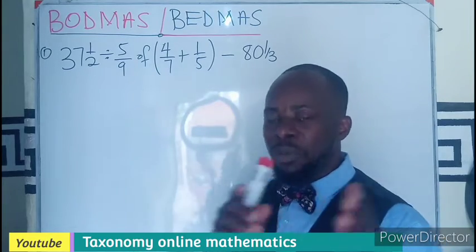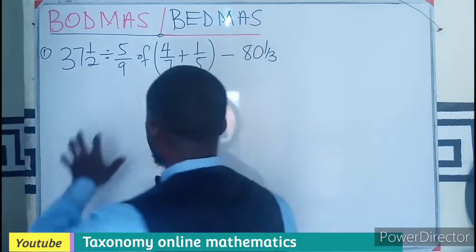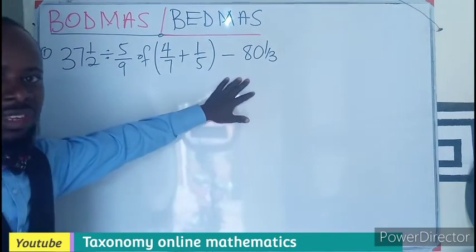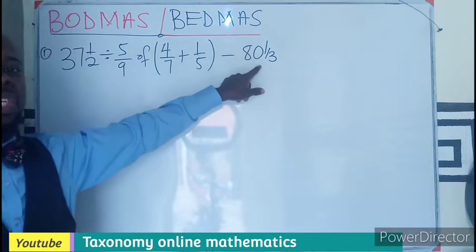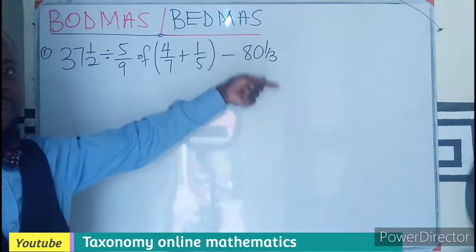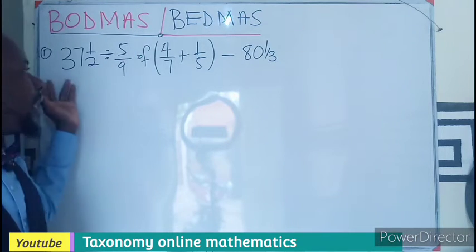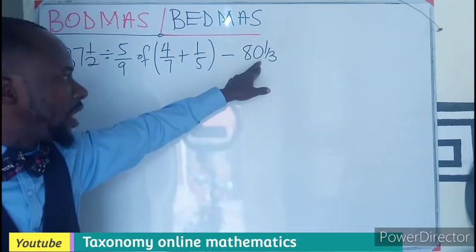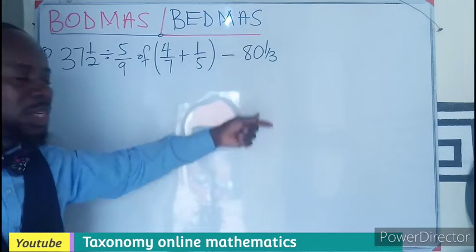So in this, when solving questions under fractions, first thing to do is to change any mixed fraction into improper fraction. That is not present in the BODMAS, but it is part of fraction calculations. You must change all mixed fractions to become improper fraction.